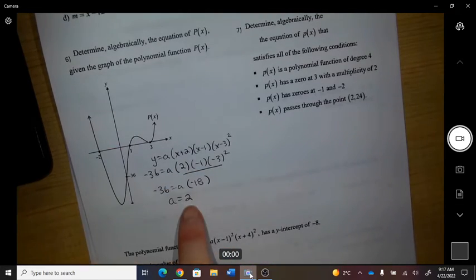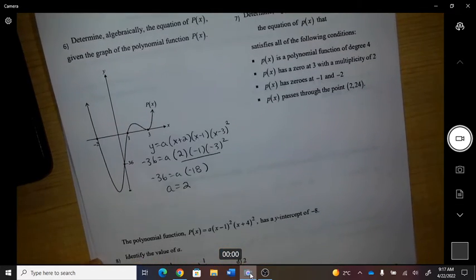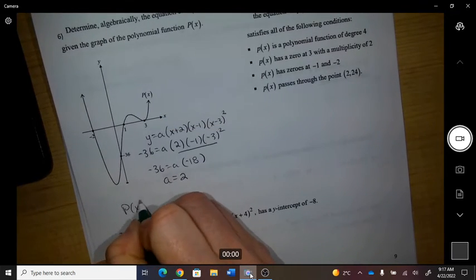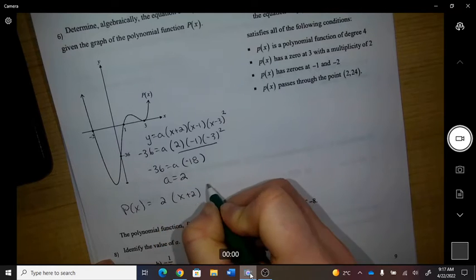And remember just to double check, like that makes sense, because that's positive. So this one is called p of x, so p of x equals 2 times the factors.